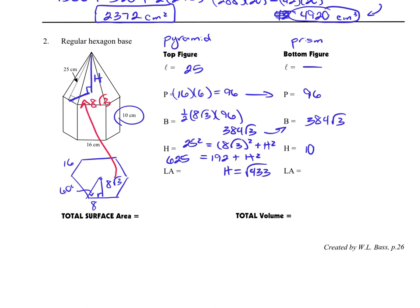Alright. Now, let's think lateral area for the top. That's going to be 1 half the perimeter, because we're working with our pyramid, 1 half the perimeter, 96, times the slant height. We've got to really keep track of our numbers here. And that's going to give us 1,200 for the lateral area for the pyramid. Lateral area for the prism is simply going to be its perimeter of 96 times its height of 10, which will give us 960.